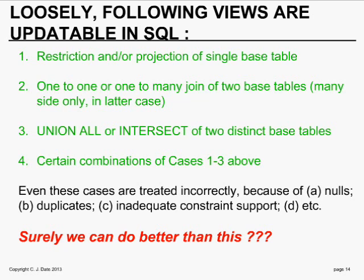Simplifying somewhat, we can say loosely that according to the standard these views are updatable: a restriction of one base table, a projection of one base table, or a combination of the two. For joins, it can be a one-to-one join or a one-to-many join — in the case of the one-to-many join you can update the many side but not the one side. For union, you can update a union all but not a union distinct. You can update an intersection. But even these cases are not done properly because of nulls, duplicates, inadequate support for constraints, and other things. So, looking at this mess, the obvious question is: surely we can do better than that.